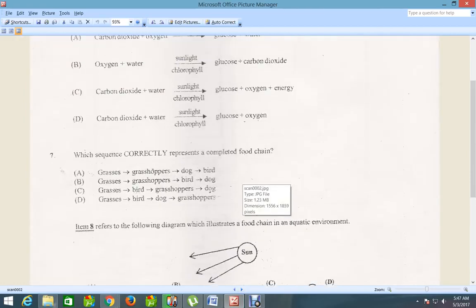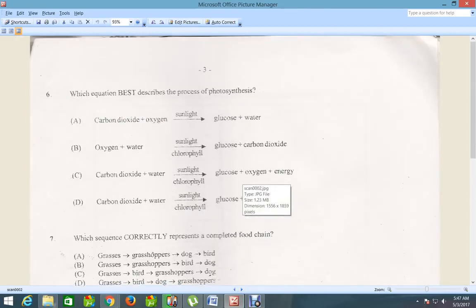Let's move on to the next question. Now which equation best describes the process of photosynthesis? So this question asks for the way photosynthesis acts in your equation. Let's see, carbon dioxide plus water, sunlight, chlorophyll, glucose, oxygen plus energy. So C is the correct answer here.